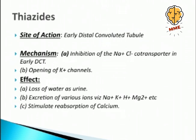Thiazides: site of action is the early distal convoluted tubule (DCT). Mechanism: primary action is inhibition of the sodium-chloride co-transporter in the early DCT; a minor secondary action is opening of potassium channels. Effect: loss of water as urine through increased sodium excretion (water follows sodium); excretion of sodium, potassium, H+, and magnesium — similar to loop diuretics. Importantly, unlike loop diuretics which cause hypocalcemia, thiazides stimulate reabsorption of calcium and therefore cause hypercalcemia. This is a very important distinction — please note it.